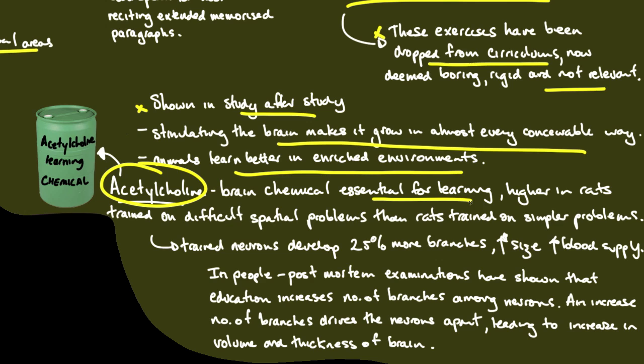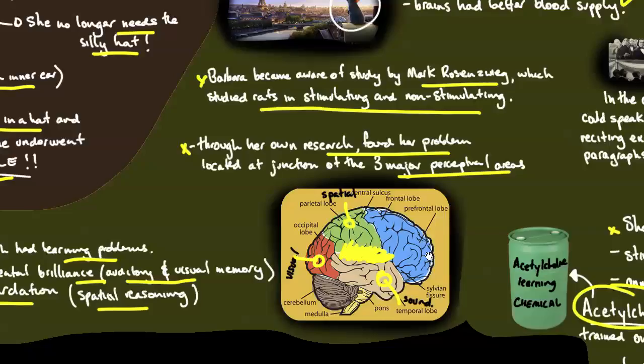Acetylcholine, a brain chemical essential for learning, is found higher in rats trained on difficult spatial problems than on simpler problems. Trained neurons develop 25% more branches with increased size and more blood supply. Even in people, post-mortem examinations show that education increases the number of branches among neurons, leading to an increase in volume and thickness of the brain.